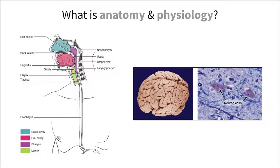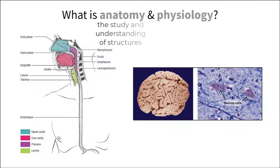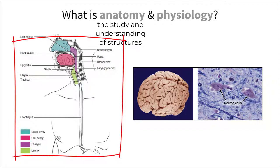When you first begin to learn about anatomy and physiology, it helps to break down these two terms separately to understand the scope of the content that you will cover. Anatomy, by definition, refers to the study and understanding of structures. As this course has a biological human focus, you will be learning about the structures of the human body — and yes, there are many.